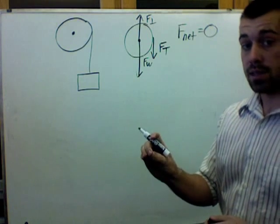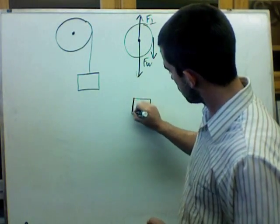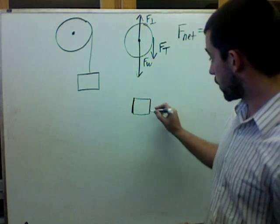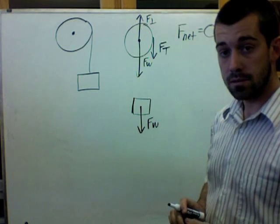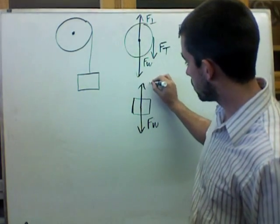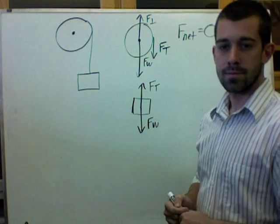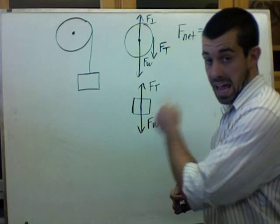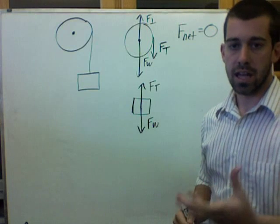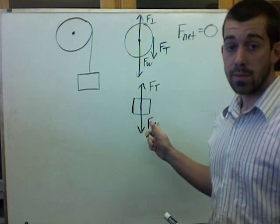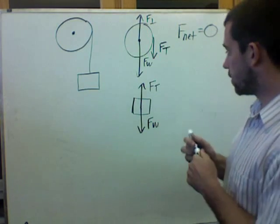I can do the same thing thinking about the mass itself. I know that the mass has a force of weight that is acting on it, and I also know that the mass has a force of tension that is acting on it. Now, on the hanging mass, I know that there actually is a net force. The net force isn't zero here because the hanging mass is actually accelerating. And so, in this case, I know that the net force